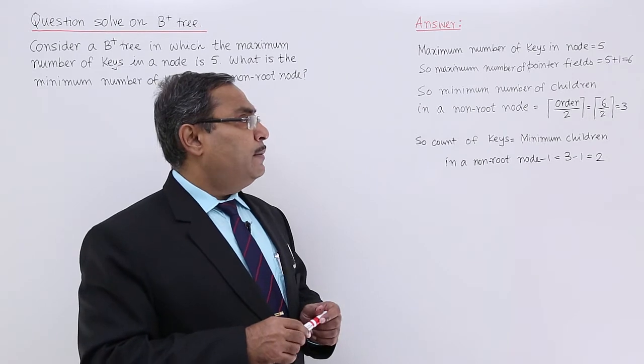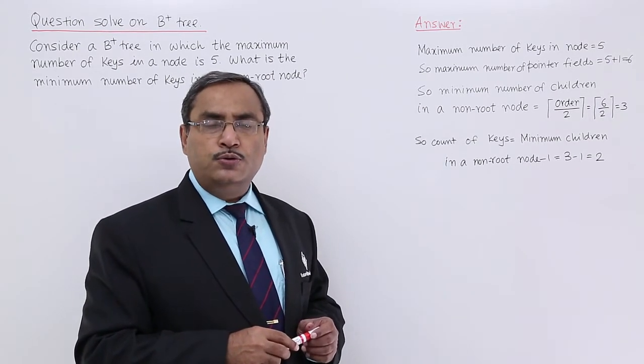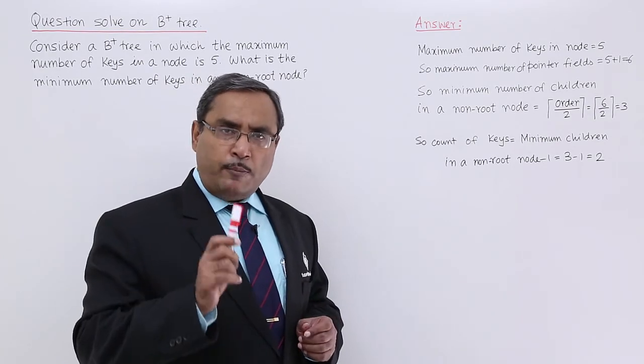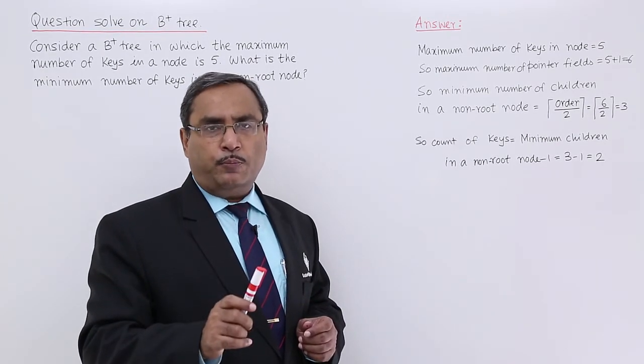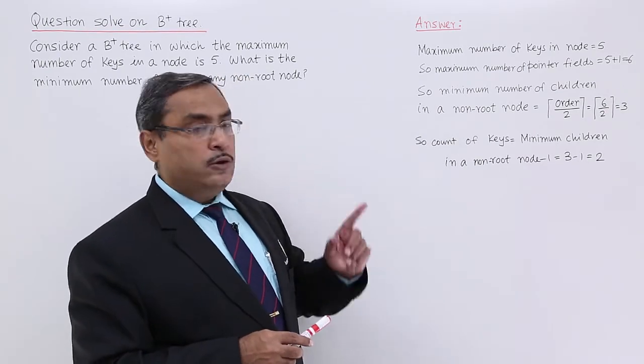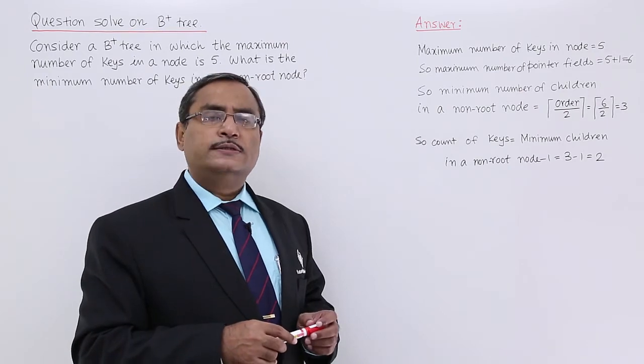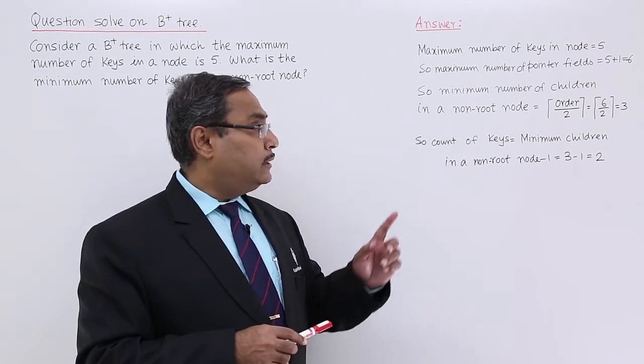The minimum number of children in a non-root node will be order by 2 ceiling of that. We know that maximum number of pointer fields in a node will decide the order. Here this value is 6. So order of this B plus tree will be 6 by 2 ceiling of that, and that is 3.